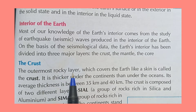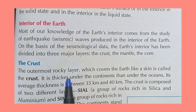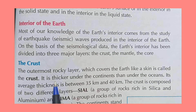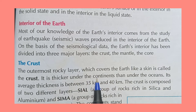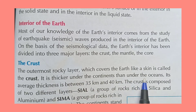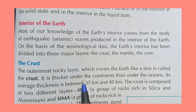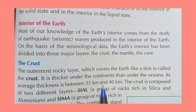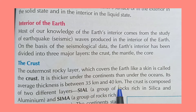The first layer is the crust. The outermost rocky layer which covers the earth like a skin is called the crust. It is thicker under the continents than under the oceans. Under the continents, where there is land area, the crust is thick — its average thickness is between 35 km to 40 km. Under the oceans, it is about 5 km.